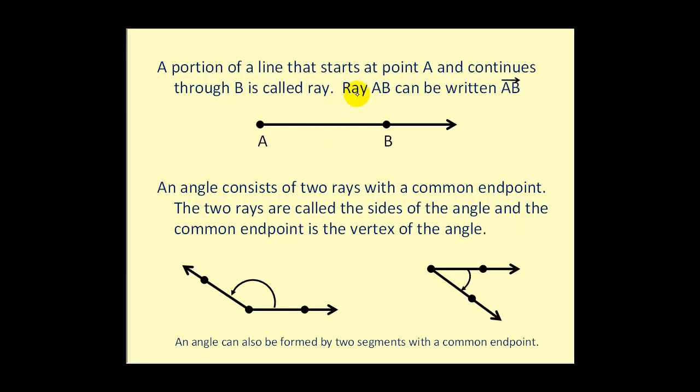A portion of a line that starts at a point A and continues through B is called a ray. Ray AB can be written using this notation.